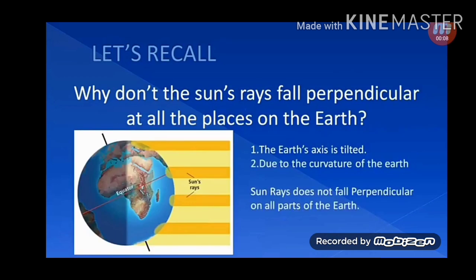Why don't the sun's rays fall perpendicular at all places on the earth? First, the earth's axis is tilted. Second, due to the curvature of the earth, sun rays do not fall perpendicular on all parts of the earth.